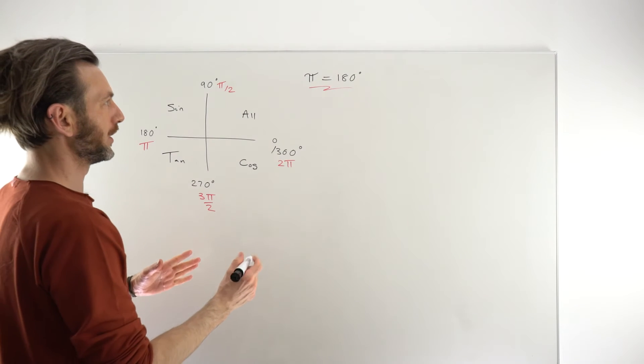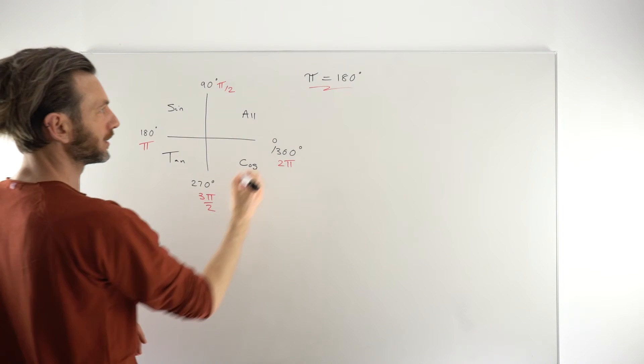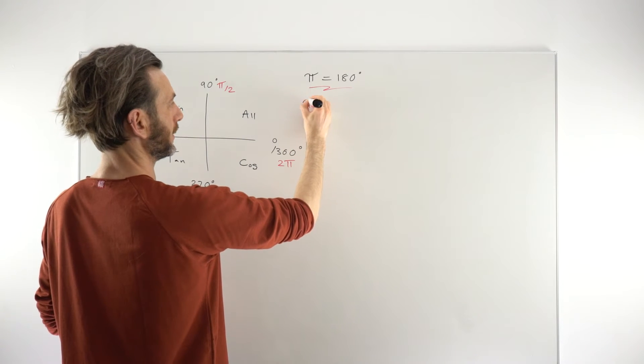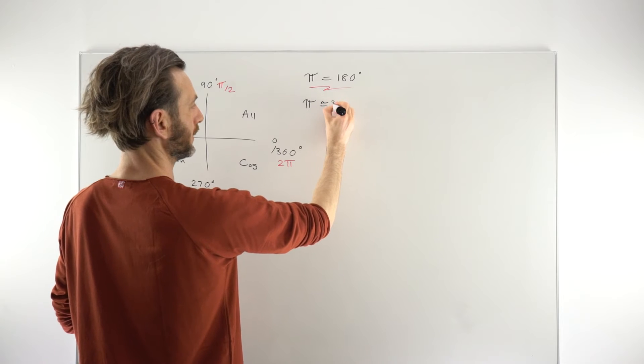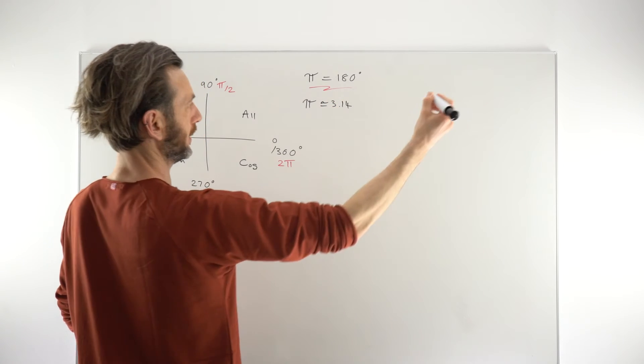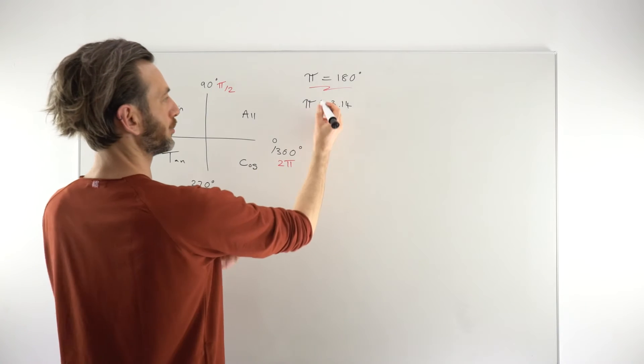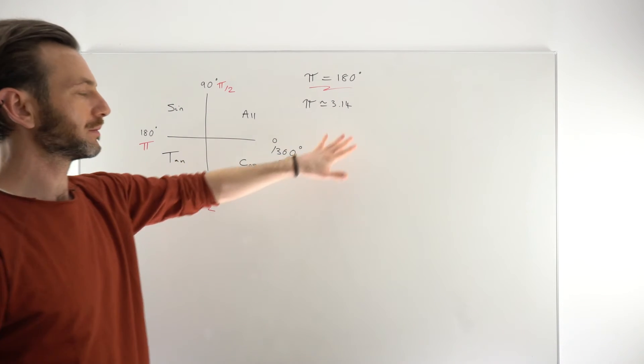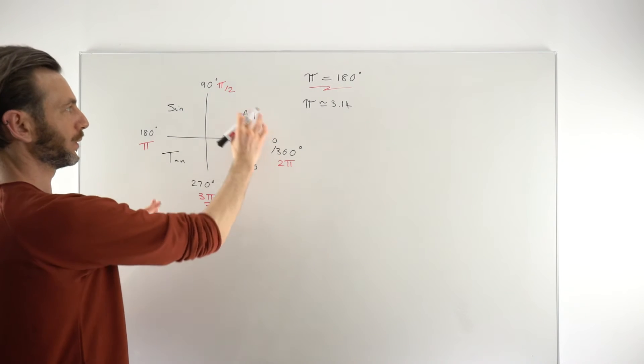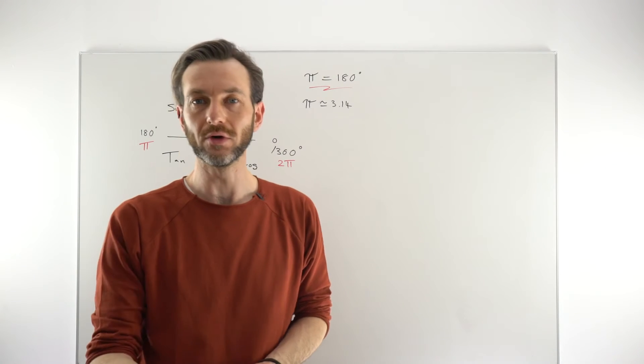But just remember as well that the number π in use here is still actually the number π, approximately 3.14. So π is still that number. But sometimes when you're working with radians, you're working with π divisions. Like π/2 is 90 degrees, so that's a nice neat way of doing it.